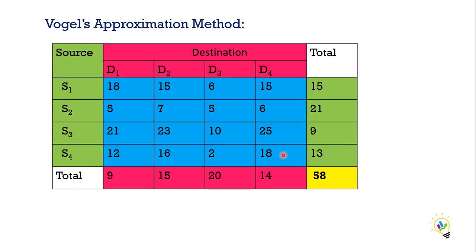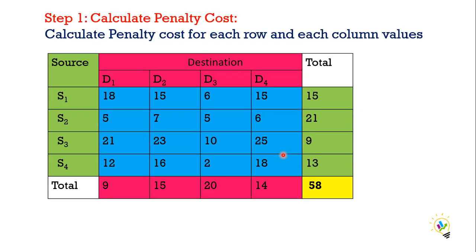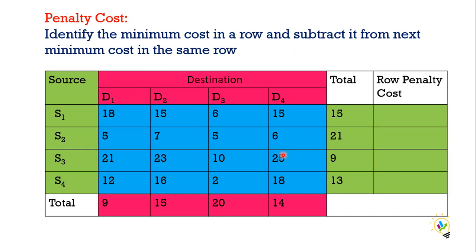In Vogel's Approximation Method, I am going to discuss in three steps. We are going to discuss the first step. Step one: calculate penalty cost. This penalty cost should be calculated for each row and each column. We have four rows and four columns. Now first we will start with rows.